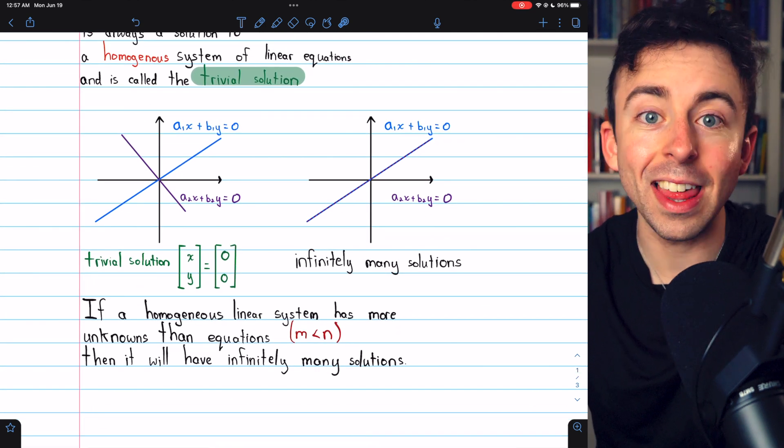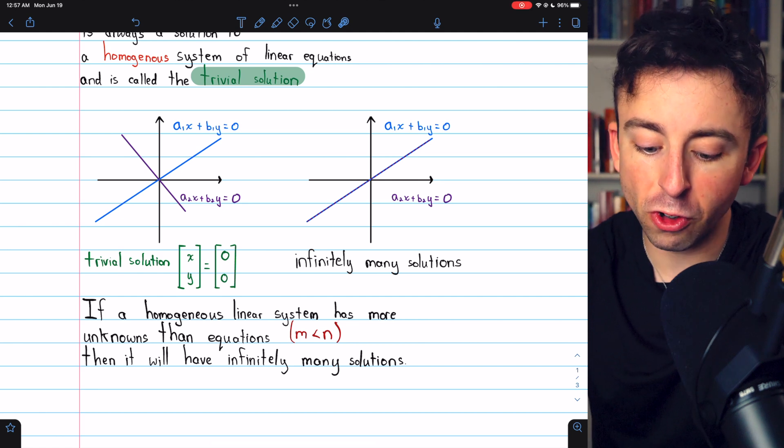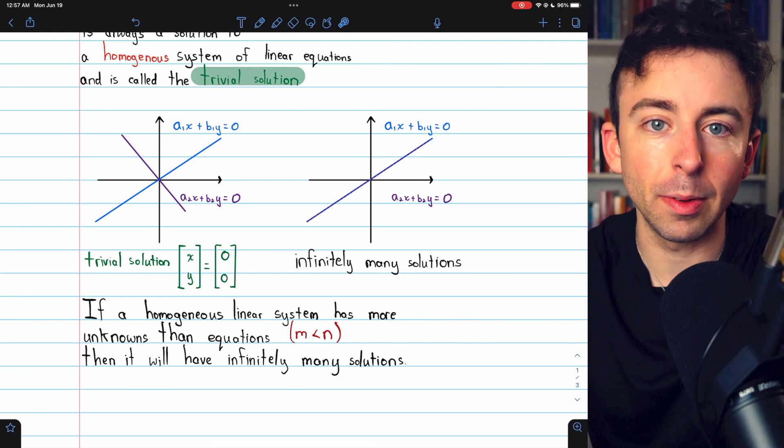then for sure our linear system is going to have infinitely many solutions. In these cases where there's more unknowns than there are equations,